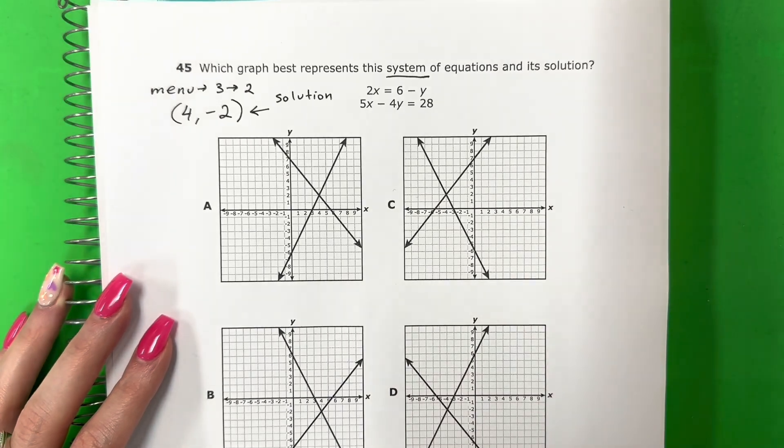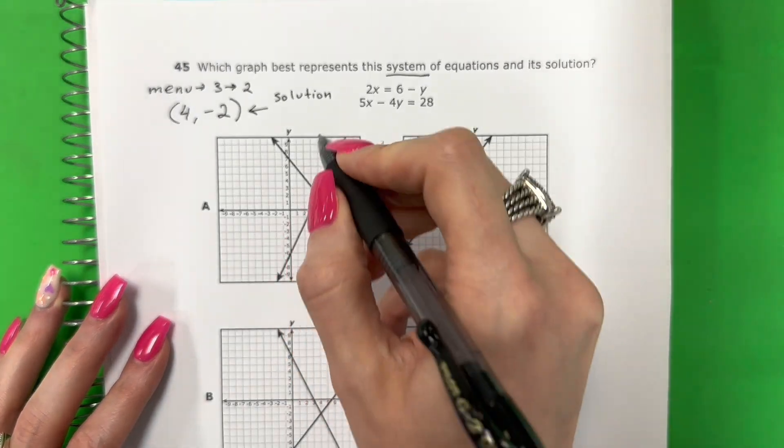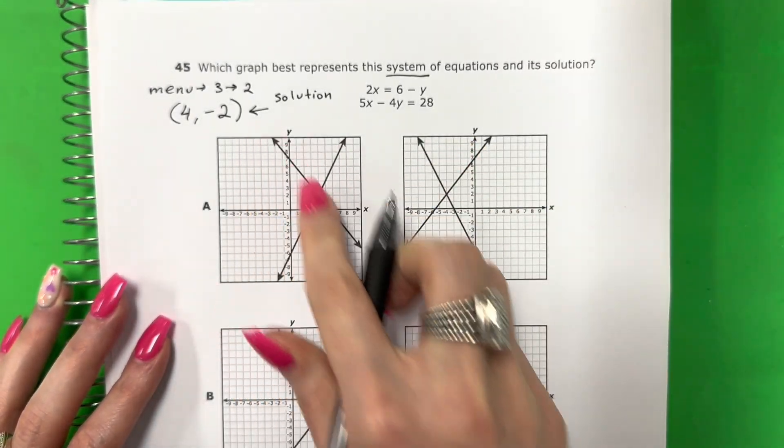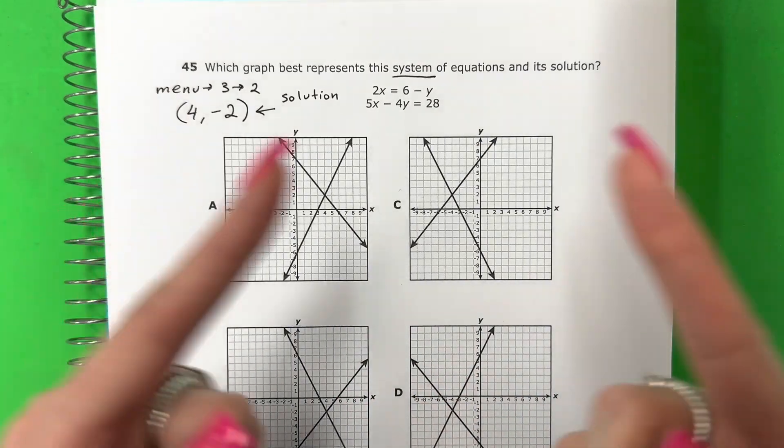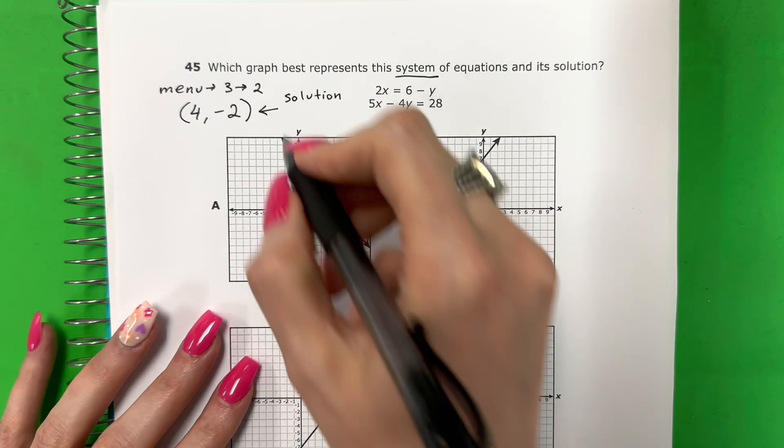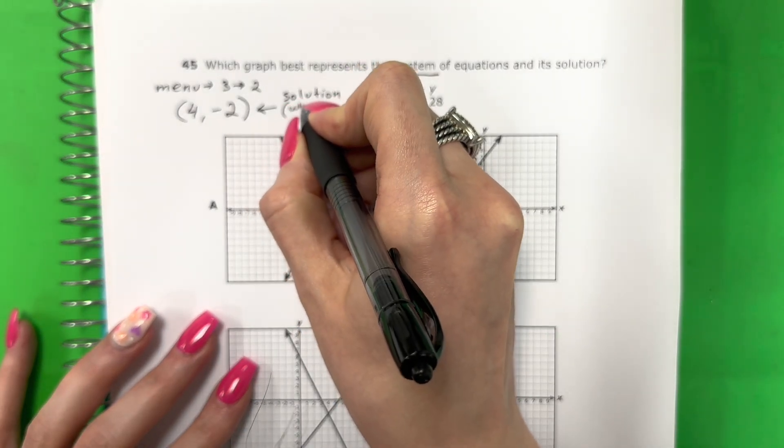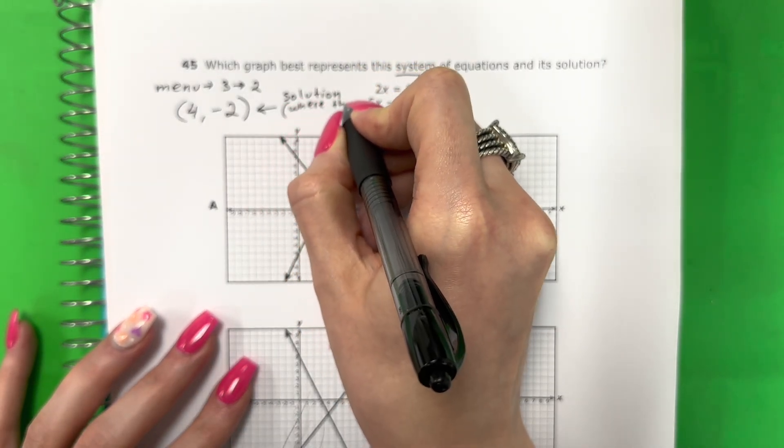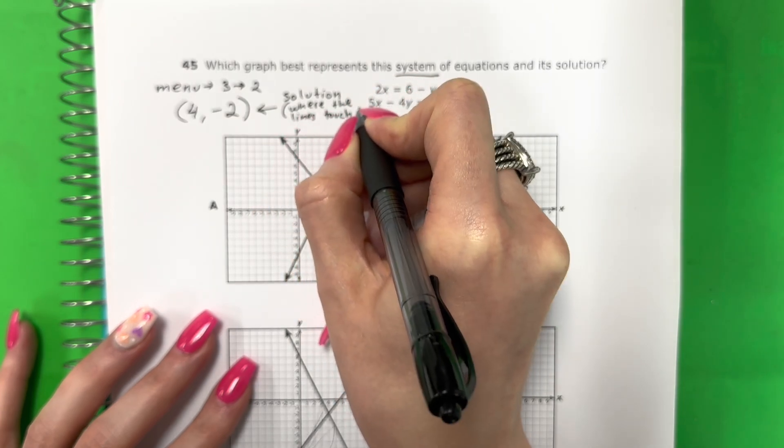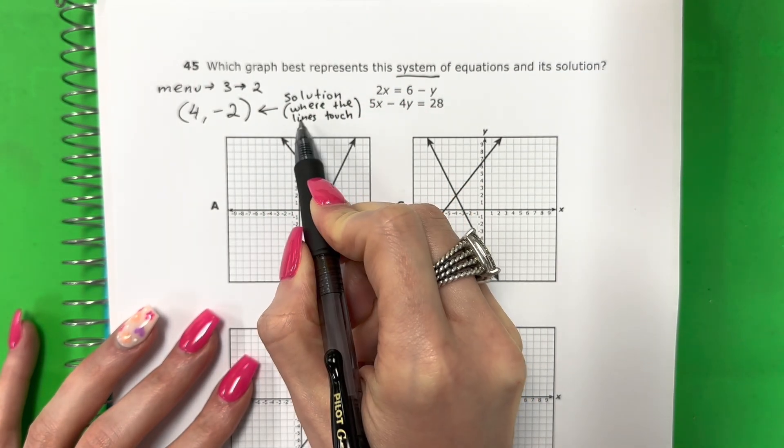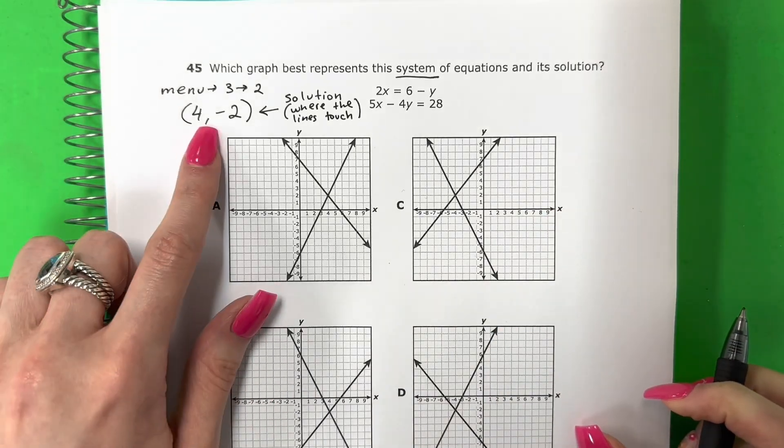What does that mean? ¿Qué significa eso? That means that that is where the two lines touch. Este significa es cuando las dos líneas se tocan.